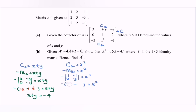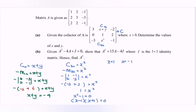Then we have negative 3 plus 2, so 1 equals X squared. Therefore X squared minus 1 equals 0. Factoring: (X minus 1)(X plus 1) = 0, giving X equals 1 or X equals negative 1. Since X must be greater than 0, X equals 1 is valid.